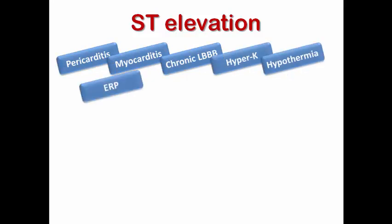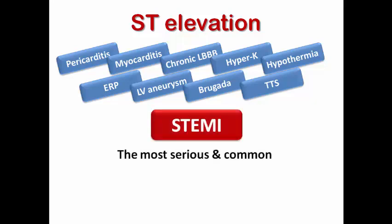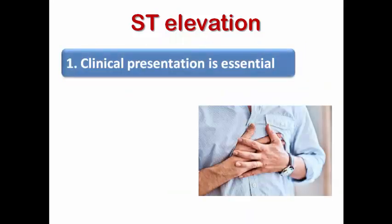How do I differentiate STEMI from other causes such as pericarditis, myocarditis, hyperkalemia, and hypothermia? There are five issues to assess. Number one is clinical presentation — it is very essential. If the presentation is suggestive of angina and ongoing myocardial ischemia, STEMI is the first possibility. Even if the ECG morphology is atypical, if the patient is having symptoms suggestive of angina with ST elevation, I would proceed with primary PCI.